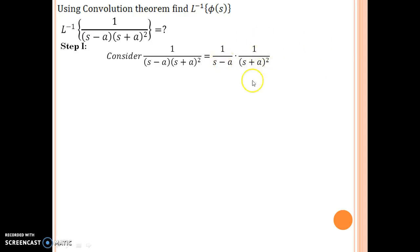These two terms, they can be same or they cannot be same. It is fine, but they should be from the function. So 1 upon s minus a and the second term is 1 upon s plus a the whole square. So now what is the next thing?